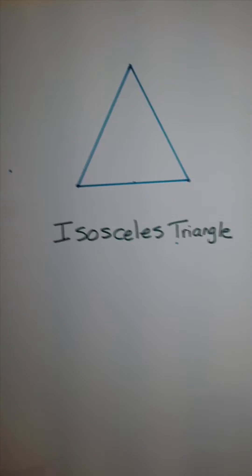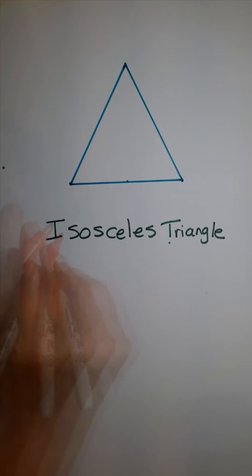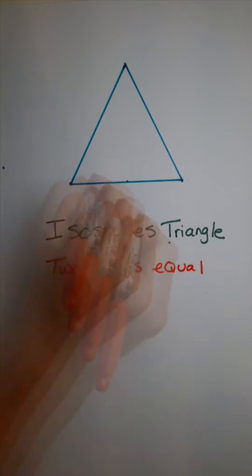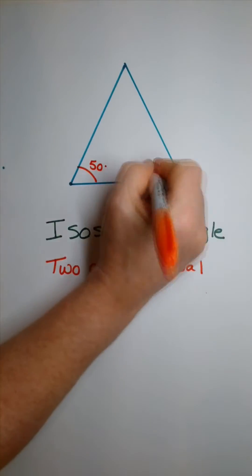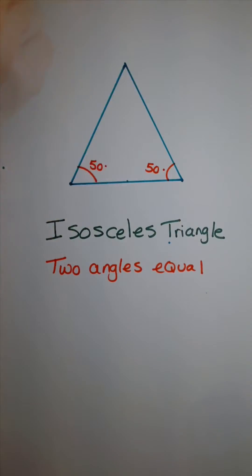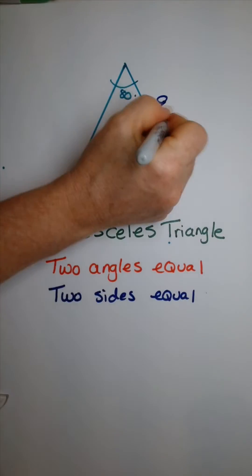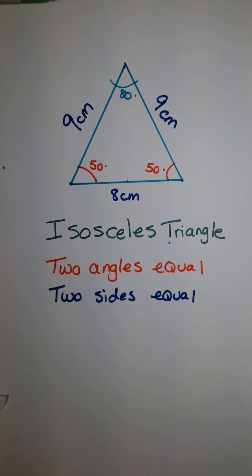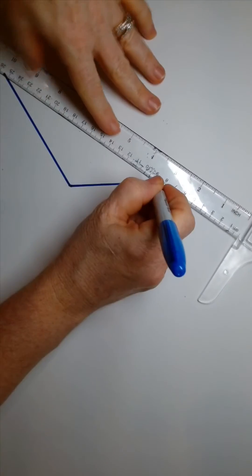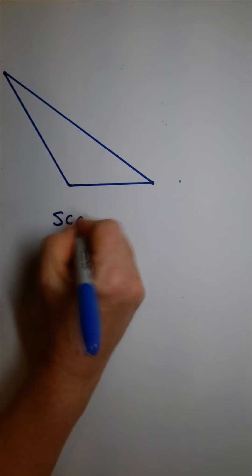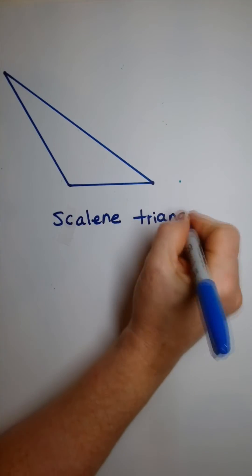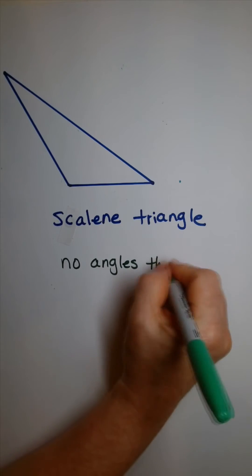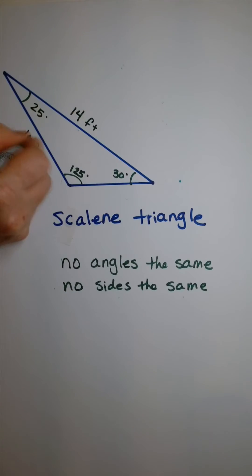An isosceles triangle has two sides that are the same, and it will have two angles that are also the same. A scalene triangle has nothing the same — all three sides are different, and all three angles are different.